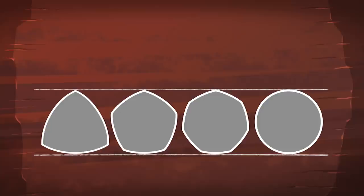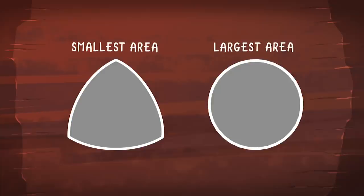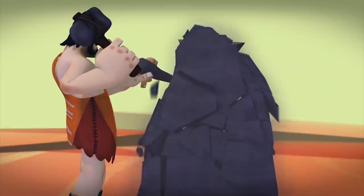Another theorem tells us that if you had a bunch of curves of constant width with the same width, they would all have the same perimeter. But the Reuleaux triangle would have the smallest area. The circle, which is effectively a Reuleaux polygon with an infinite number of sides, has the largest.